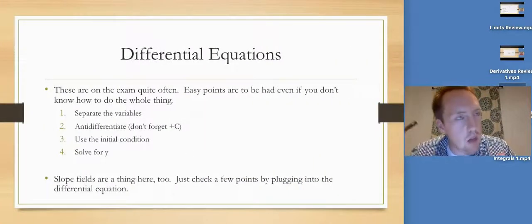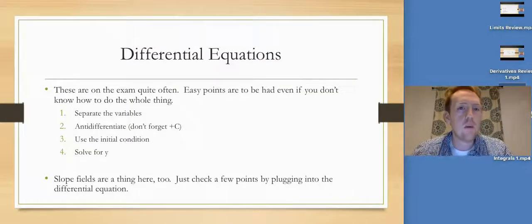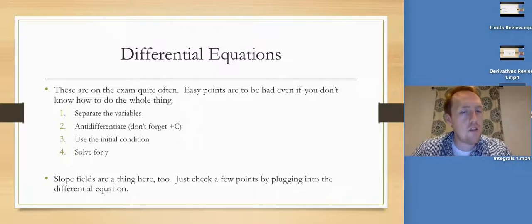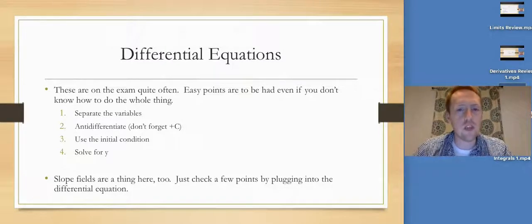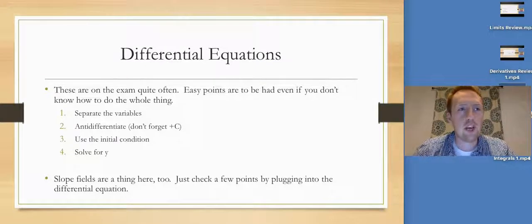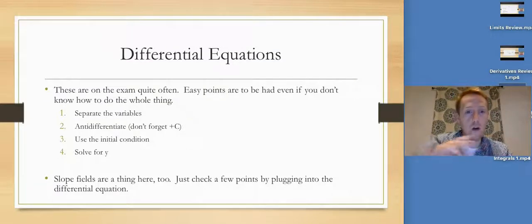Differential equations show up almost always on the exam. Easy points are to be had even if you have no idea what you're doing, because I know every one of you can separate the variables, anti-differentiate and add C, then plug in the initial condition to find C. The hard part is solving for Y and it's only one of the five points. Slope fields are a thing here too — I recommend checking a few points by plugging into the differential equation and figuring out where horizontal slopes of 0 occur.